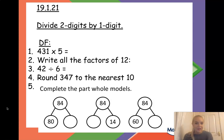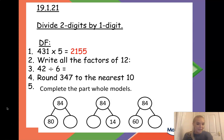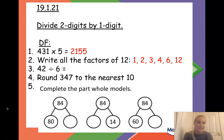Number one: 431 multiplied by 5. You can use your written method of multiplication to work this out — the answer is 2155. Number two: writing down all the factors of 12. We know we have multiple factor pairs of 12 which are 1 and 12, 2 and 6, and 3 and 4, so there are six factors of 12.